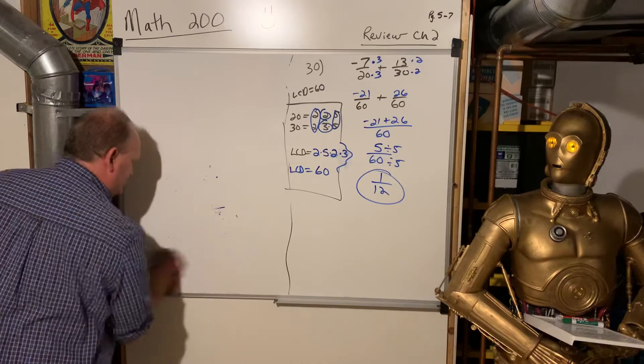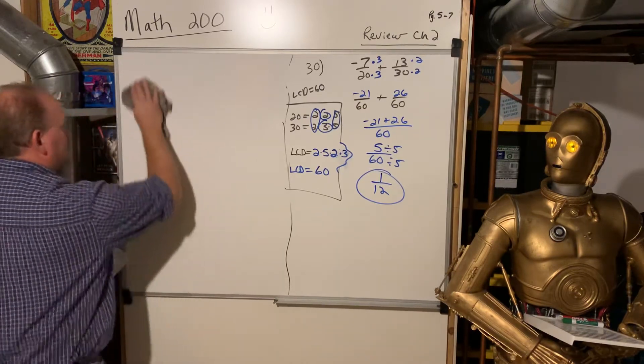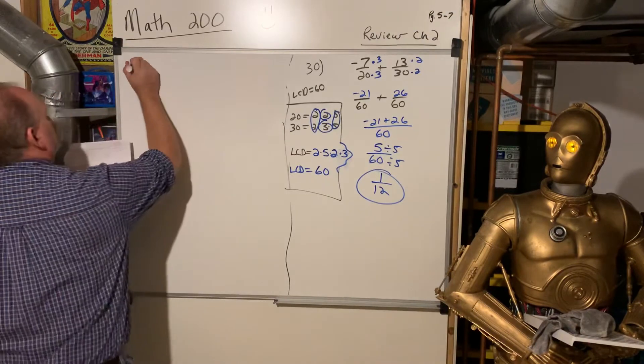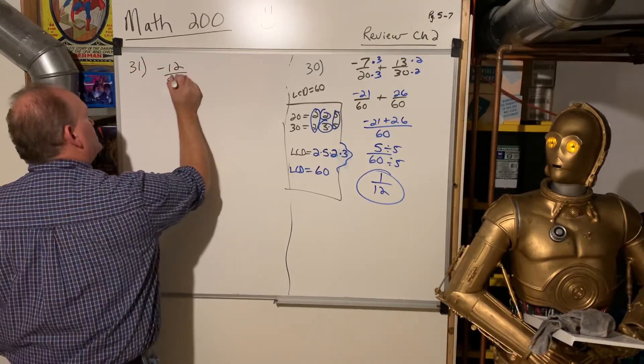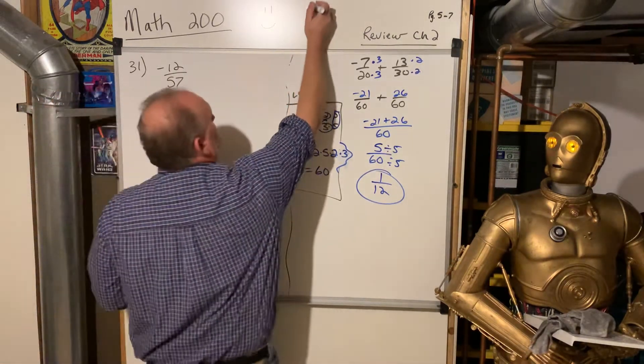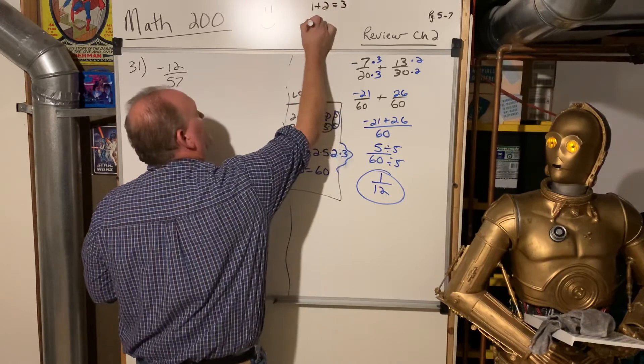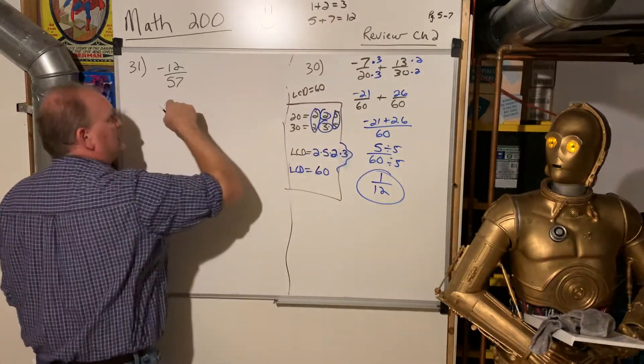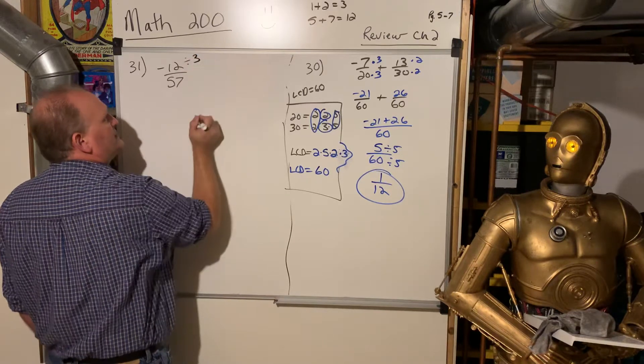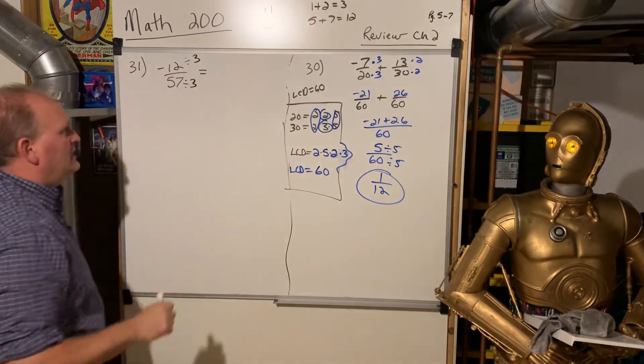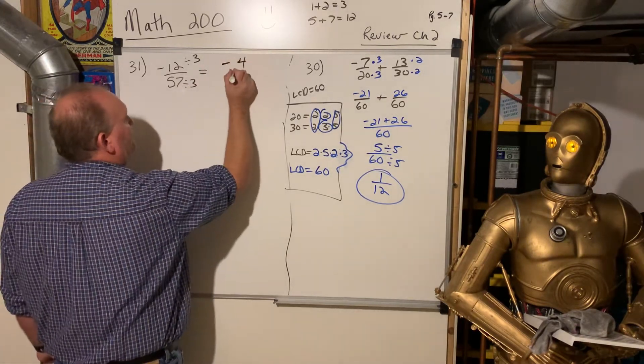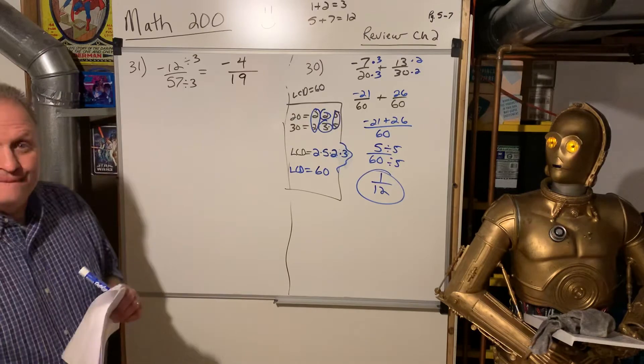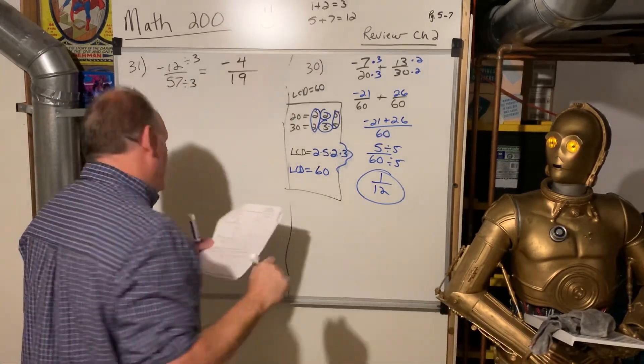Let's look at 31. So 31 is, simplify the fraction. Well, that's a refreshing little problem. So there's a trick that if you add up the digits, 1 plus 2 is equal to 3, 5 plus 7 is equal to 12. So, when you add up the digits, if you get a number that's divisible by 3, then the original number is divisible by 3. Now, we all knew 12 was divisible by 3. But 57, that might not have jumped out at you. So, I divide top and bottom by 3. That's negative 4 over 19. All right. That's reduced. Negative 4 19ths. Don't forget the negative, either. That happens a lot.